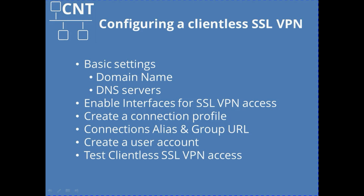The first step is to make sure that we have a domain name and DNS servers configured to allow the VPN to resolve host names on the internal network. Next, we will enable SSL on the outside interface of the Cisco ASA. Then we will create a connection profile and configure an alias and group URL for our SSL VPN. Finally, we will create a user account which we will use to log in to our clientless SSL VPN.